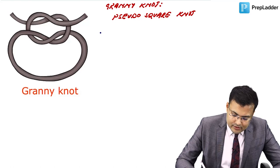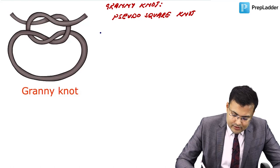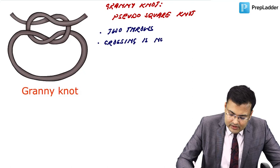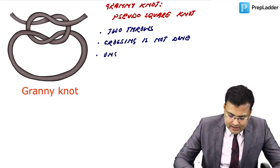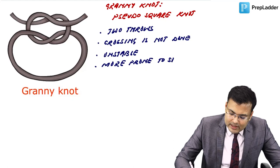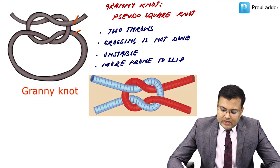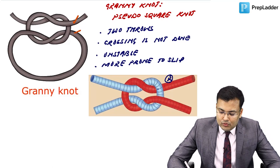Parts of the needle: the swaged end is where the suture is attached; the opposite pointed end is the point; the middle section is the body or shaft. Some needles have an eye (hole) through which the suture is threaded. The needle holder should grip the needle at the junction of two-thirds from the pointed end and one-third from the swaged end.